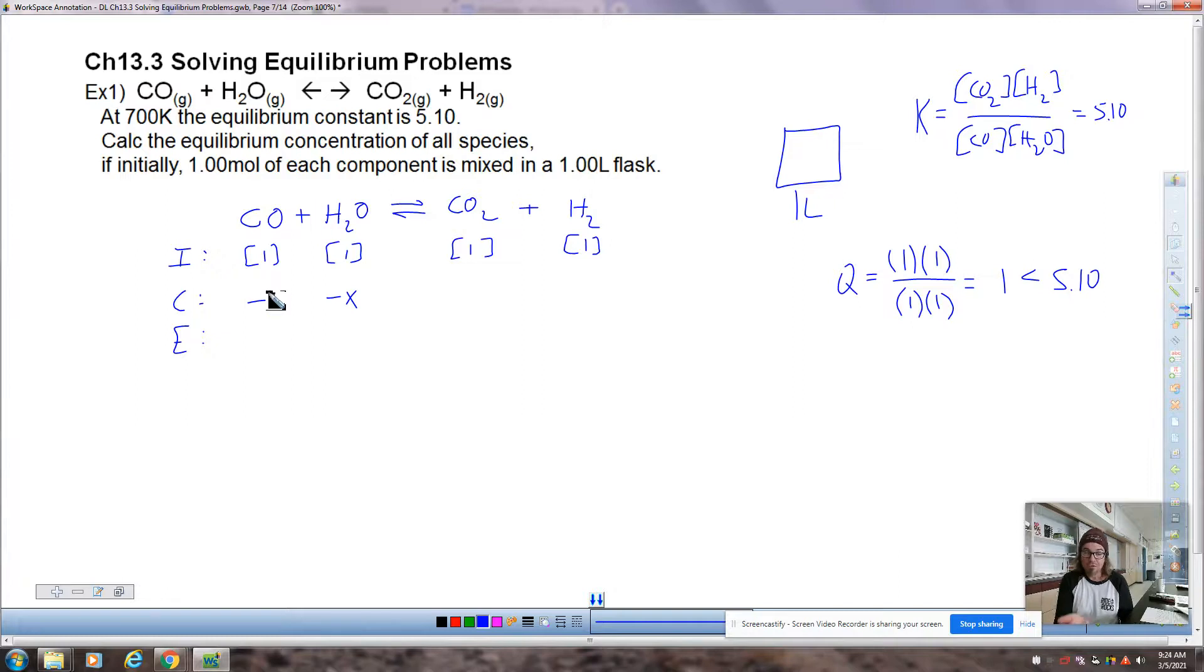So I need to subtract X amount of each of these. Since they're in a one-to-one ratio, if I lose X amount of carbon monoxide, I lose X amount of water and I gain X amount of carbon dioxide and I gain X amount of hydrogen. So my equilibrium concentrations are 1 minus X, 1 minus X, 1 plus X, and 1 plus X. Don't forget to pause along the way if there's things that don't make sense because this takes a little bit to ingest. I'm going to write my K expression with those values. 5.10 equals - nope, nope, I wrote that backward. Products over reactants. 1 plus X times 1 plus X over 1 minus X times 1 minus X. That then I can rewrite this right side of the equation as 1 plus X squared over 1 minus X squared equals 5.10.